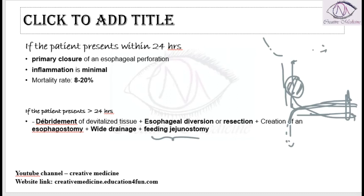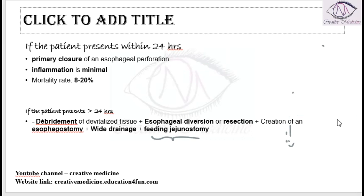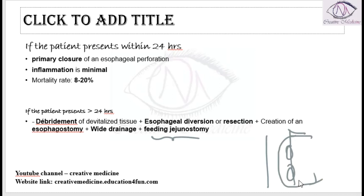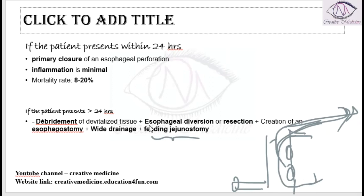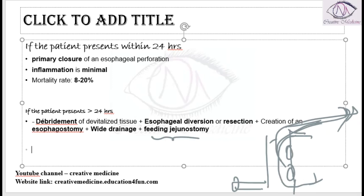To clarify: if the patient presents after 24 hours, inflammation has already started and there can be gangrene formation. First, debride all the devitalized tissue, then either resect or divert the esophagus so that secretions are drained. Create an esophagostomy outside, do wide drainage completely, and perform a feeding jejunostomy. After some time, an anastomosis with a conduit can be done. The mortality rate for patients presenting after 24 hours is almost 50 percent.